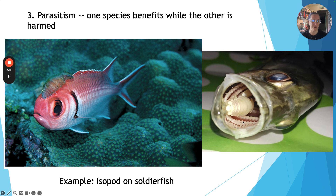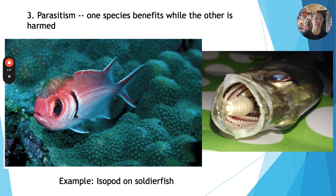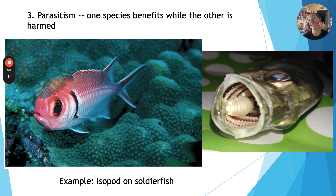In another case, an isopod acts as the tongue of a fish, so anything the fish tries to eat, the isopod gets to eat first. There are lots of different types of parasites — ticks, leeches, tapeworms — and if you go deep on the internet, you can find strange parasites that live in eyeballs and brain parasites too.